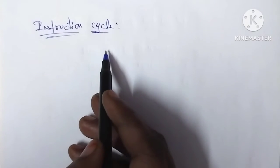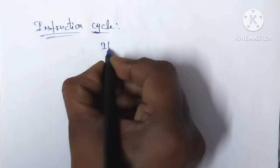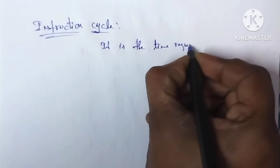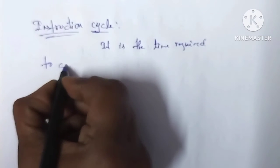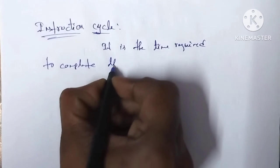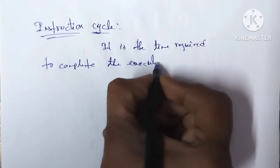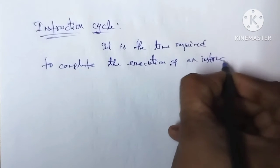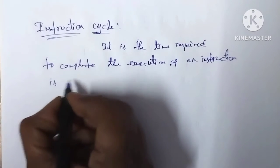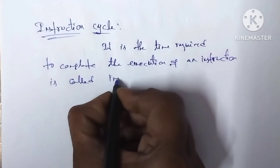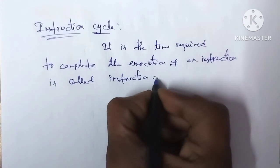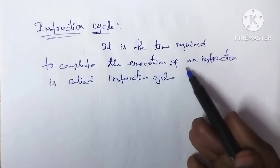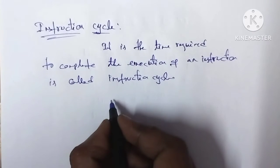Instruction cycle: it is the time required to complete the execution of an instruction, is called the instruction cycle.